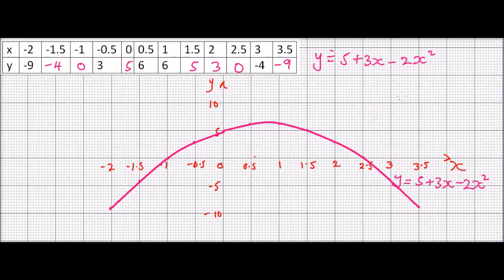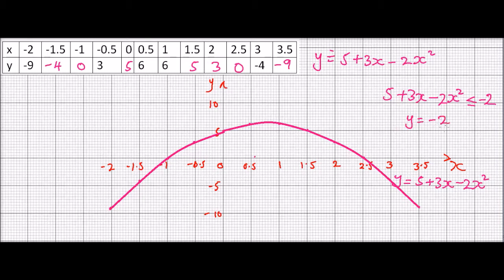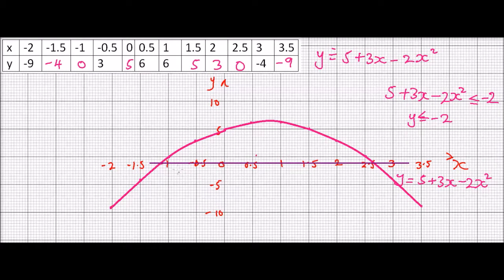From the graph, we need to find the values of x where 5 plus 3x minus 2x squared is less than or equal to minus 2. This means we need where y is less than or equal to minus 2. We draw the horizontal line y equals minus 2 on the graph.